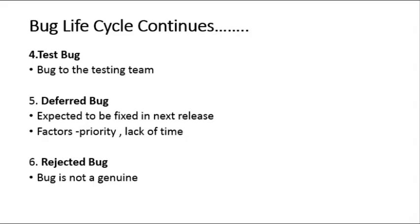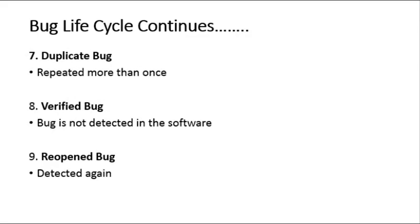The next status is Rejected. When the developer finds that the bug is not genuine or is unable to reproduce it, he will reject the bug and change the status to Rejected. The next status is Duplicate. If a particular bug is reported more than once, or if two bugs point towards the same concept, the status of one of the bugs is changed to Duplicate.